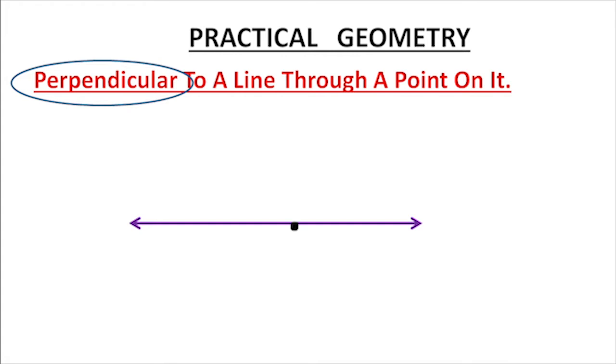On it means we can select a point anywhere on the line. Better to take almost in the middle in the figure, and through that point we have to draw a perpendicular. Okay, we will study how to construct it.